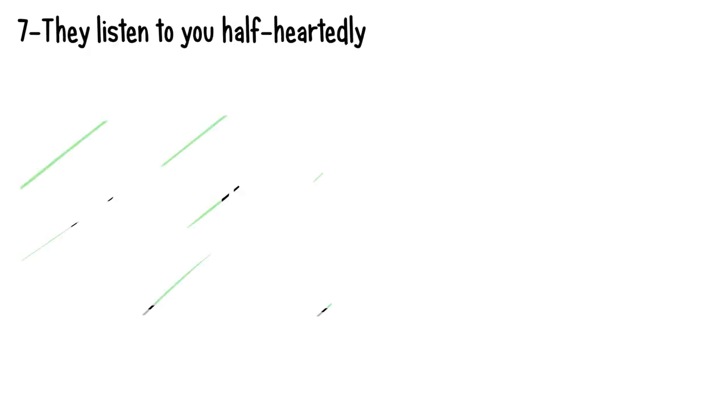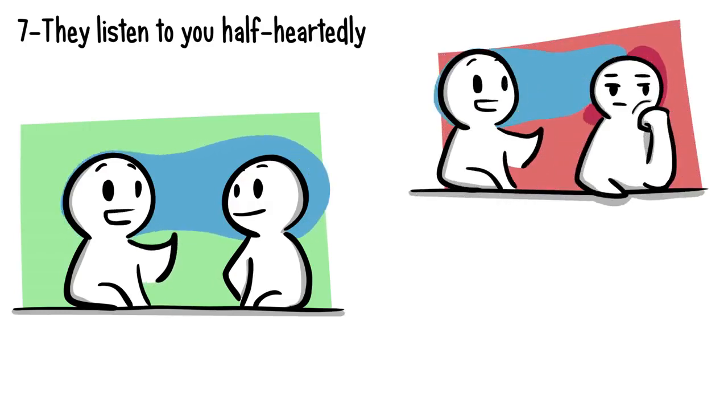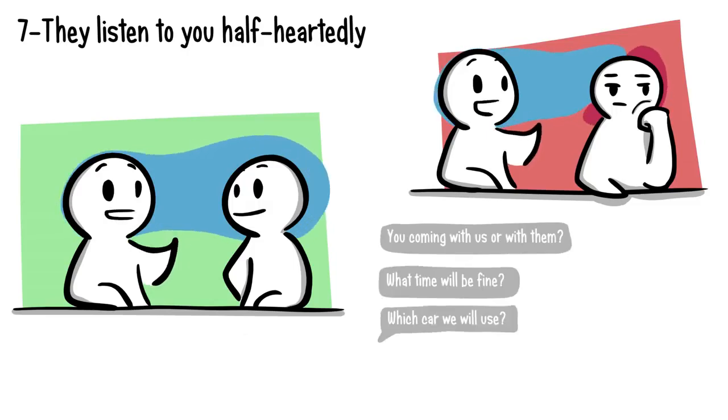Number seven. They listen to you half-heartedly. When we care about someone, we usually do our best to listen to what they say. But if someone is only listening to half of your story and zones out for the rest of it, it's clear they just aren't that invested in you. Other indicators include scanning over your messages instead of fully reading them, giving you only half the answers you need.